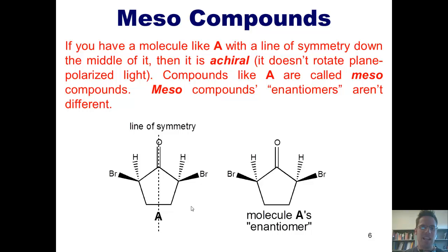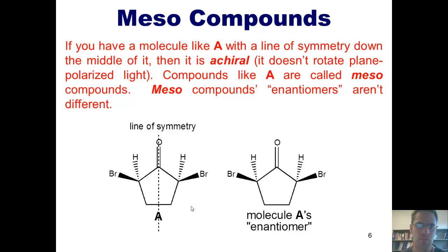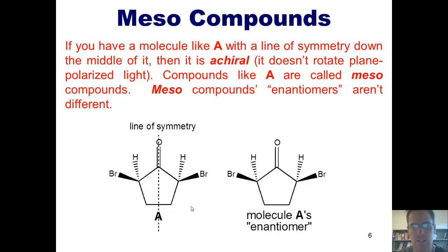The take-home is: if you have any molecule and you can draw a straight line down it anywhere and have the left side look like the mirror image of the right side, then that compound is meso. Meso compounds do not have enantiomers, because if you draw the mirror image of them, the mirror image molecule is completely superimposable with the original. Hence, meso compounds are achiral, meaning that they do not rotate plane-polarized light.